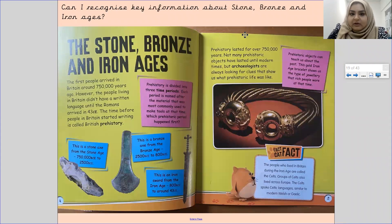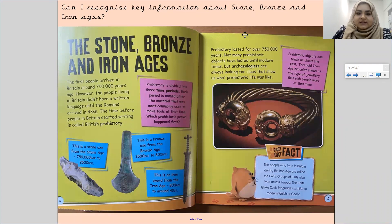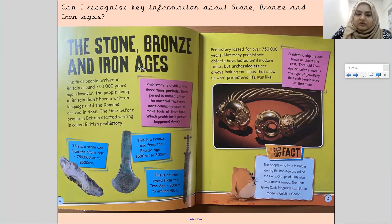Pause the screen, grab yourself a piece of paper and a pen just to take down notes. So I'm going to start reading this to you. The Stone, Bronze and Iron Ages — so this is my heading. The first people arrived in Britain around 750,000 years ago. However, the people living in Britain didn't have a written language until the Romans arrived in 43 CE. The time before people in Britain started writing is called British prehistory.